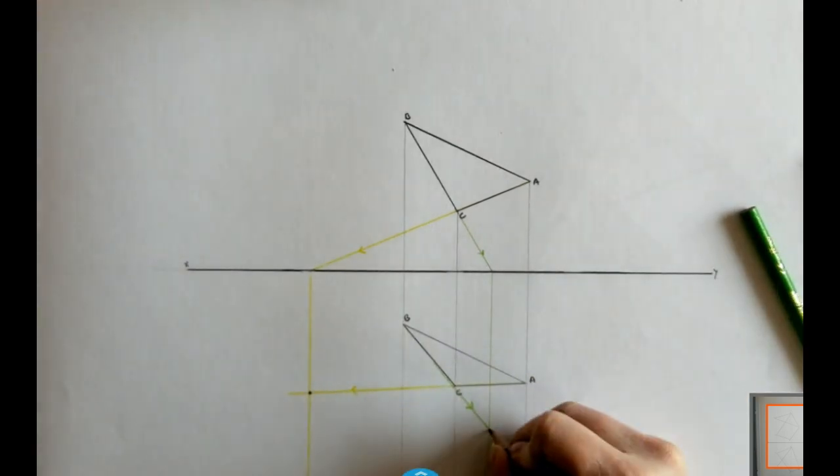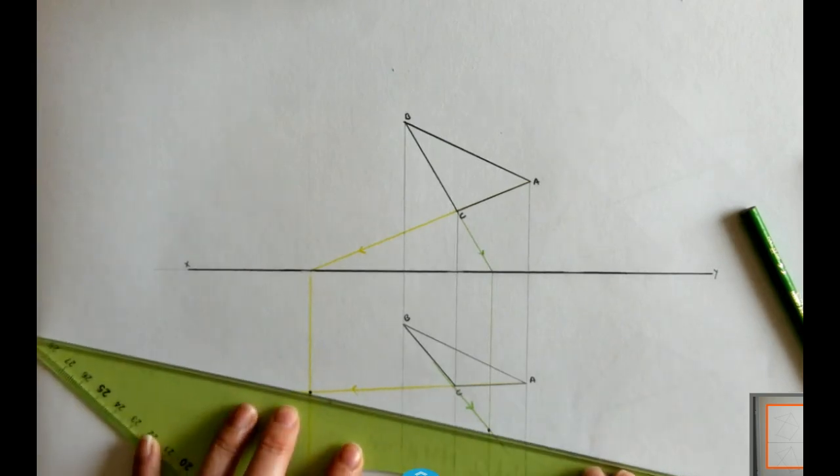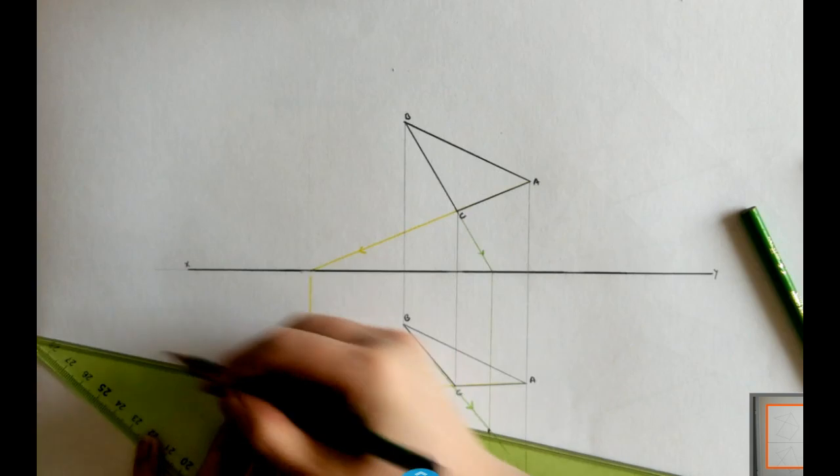And they are touching at these two points here. Now these two points as you can see when we join them, they are going to give us now a horizontal trace.